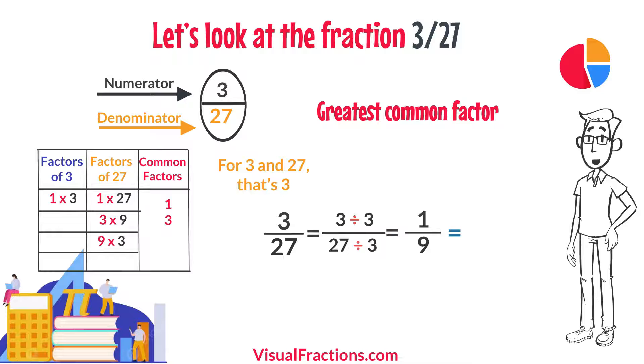So, simplifying 3 27ths, we end up with 1 9th, which is the fraction in its simplest form and cannot be reduced any further.